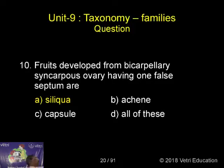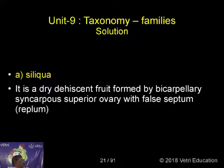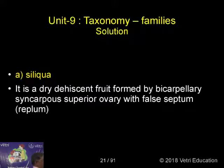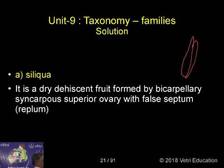Siliqua is a dry dehiscent fruit developed from a Bicarpellary Syncarpous superior ovary with a false septum. While dehiscing, the central placenta with the false septum remains, and the two sides — you can find the pericarp on both sides.